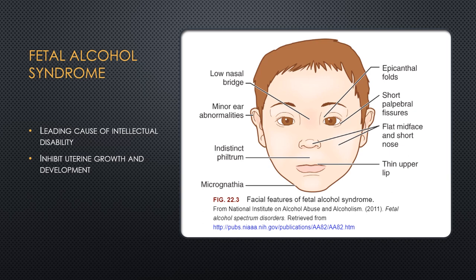Fetal alcohol syndrome is unfortunately the leading cause of intellectual disabilities. Alcohol during pregnancy inhibits uterine growth and postnatal development. We can see microcephaly, craniofacial malformations, limb defects, and even heart defects. You can recognize some of the different facial malformations seen in a baby that may have fetal alcohol syndrome.